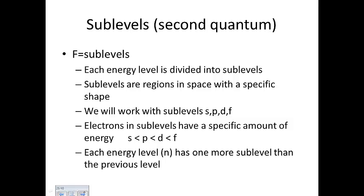The second quantum number is sublevels, represented by L. Each energy level is divided into specific sublevels, which are regions of space with a very specific shape. Just like energy levels have different amounts of energy, these sublevels within those energy levels also have different amounts of energy.